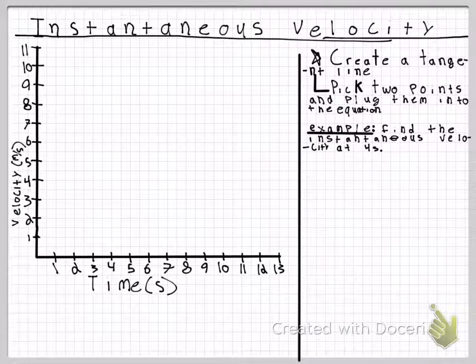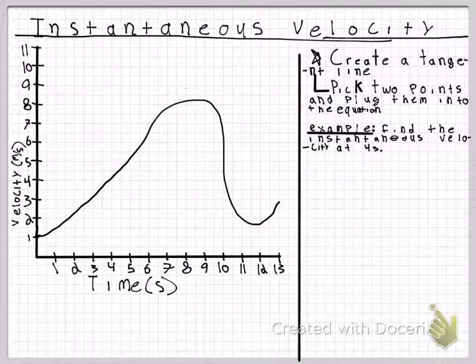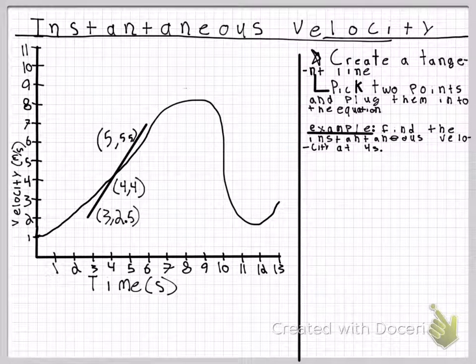An example is find the instantaneous velocity at 4 seconds. After we created our tangent line, we picked the points 5,5.5 and 3,2.5.